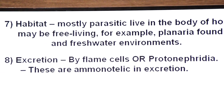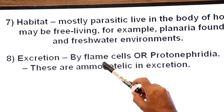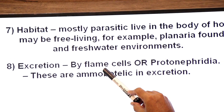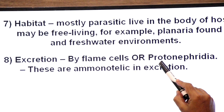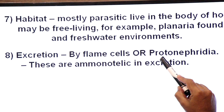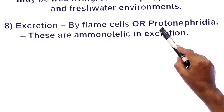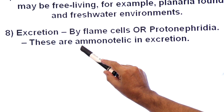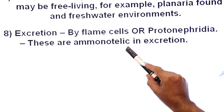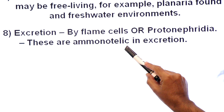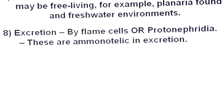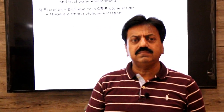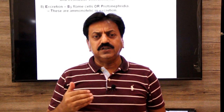Now excretion. Their excretion takes place by bulb-like cells called flame cells. They have a tubular excretory system called protonephridium (singular) and protonephridia (plural). With the help of flame cells, they excrete ammonia. Animals which excrete ammonia are called ammonotelic animals, so they are ammonotelic in their excretion. We will discuss the protonephridia on the diagram.